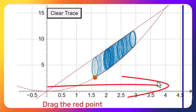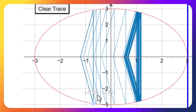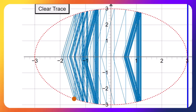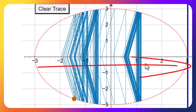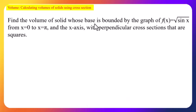Note that the cross-section can also be a triangle: dragging the triangle forms a solid object, and integrating all triangles along the line gives the volume. Now let us see some examples. Calculate the volume of a solid whose base is bounded by the graph f(x) = √(sin x) from x = 0 to x = π and the x-axis, with perpendicular cross-sections that are squares.